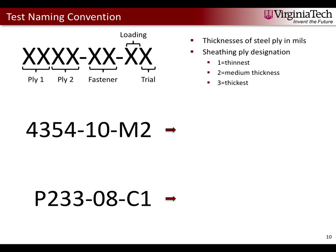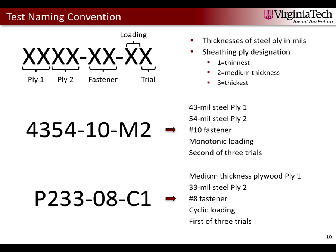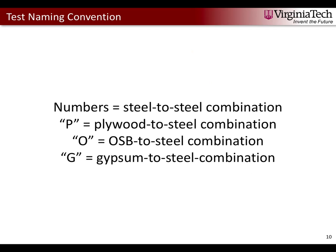Here are two examples. The first is a steel-to-steel combination: 43-mil steel ply 1, 54-mil steel ply 2, a number 10 fastener, and the second of three monotonic tests. The second example has plywood medium thickness — '2' means medium, 'P' means plywood — with a 33-mil steel ply 2, a number 8 fastener, and the first cyclic test of three trials. In short: numbers mean steel-to-steel, P means plywood, O means OSB, and G means gypsum.